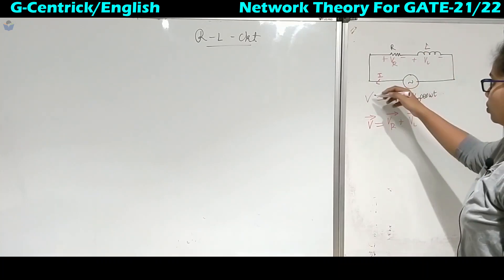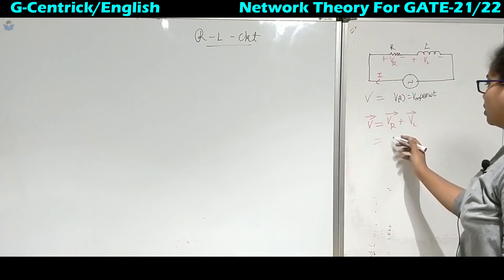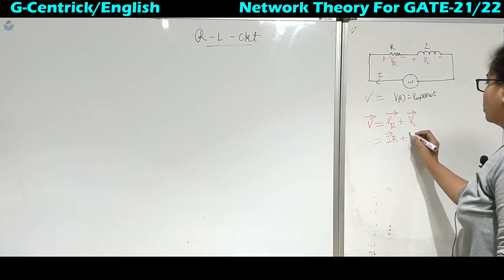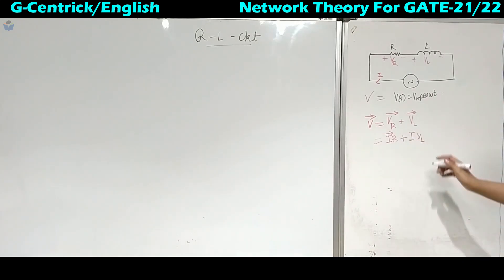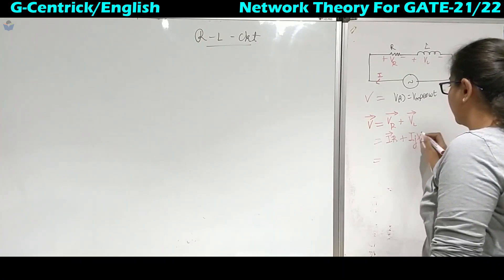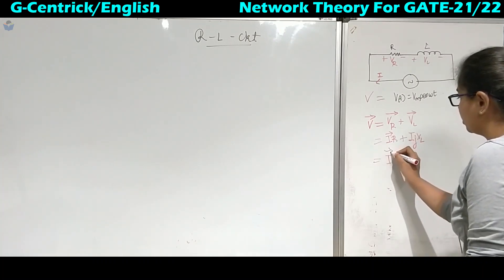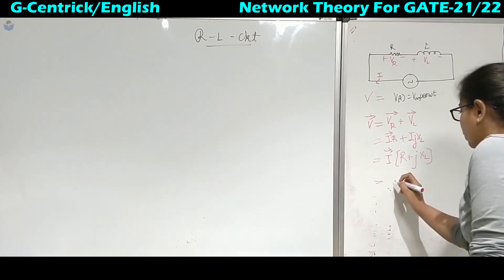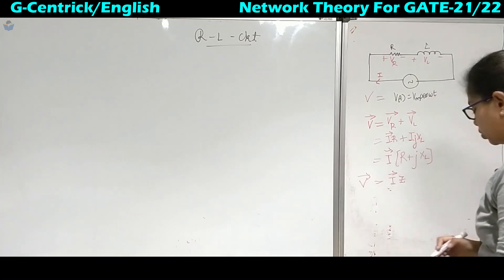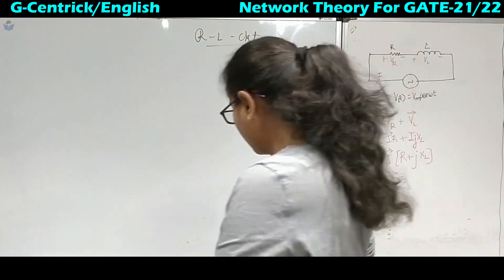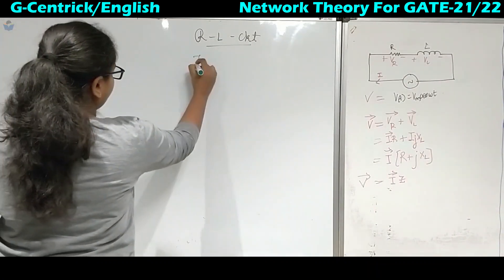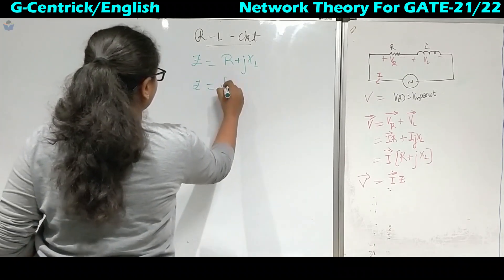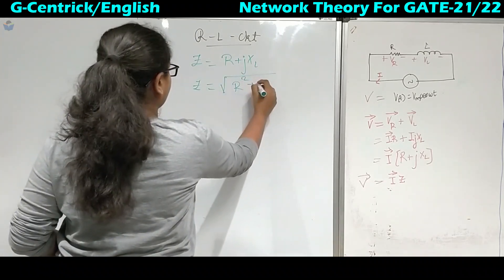Applying KVL: the voltage drop across Vr is I times R, and the voltage drop across Vl is I times jXL — where j indicates plus 90 degrees and XL is the inductive reactance. Taking I as the common factor, we get V = I(R + jXL), where the term in parentheses represents the impedance Z.